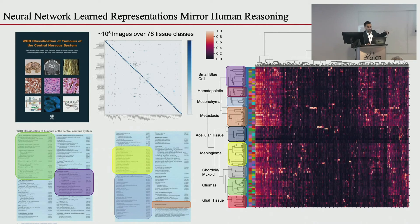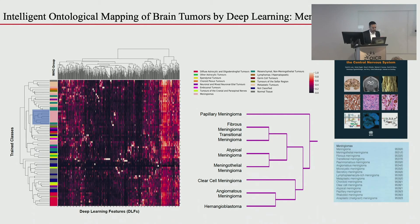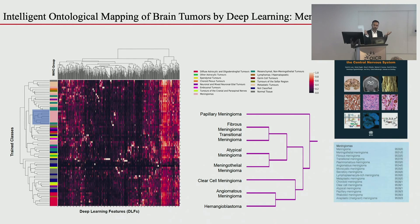Zooming in on specific clusters — the color code reflects WHO classification chapters — one cluster showed a large row of salmon color: papillary meningioma, fibrous meningioma, transitional meningioma, atypical meningioma. Seven of the eight tumors in that cluster are meningiomas, grouped together based on the overarching biology we understand.